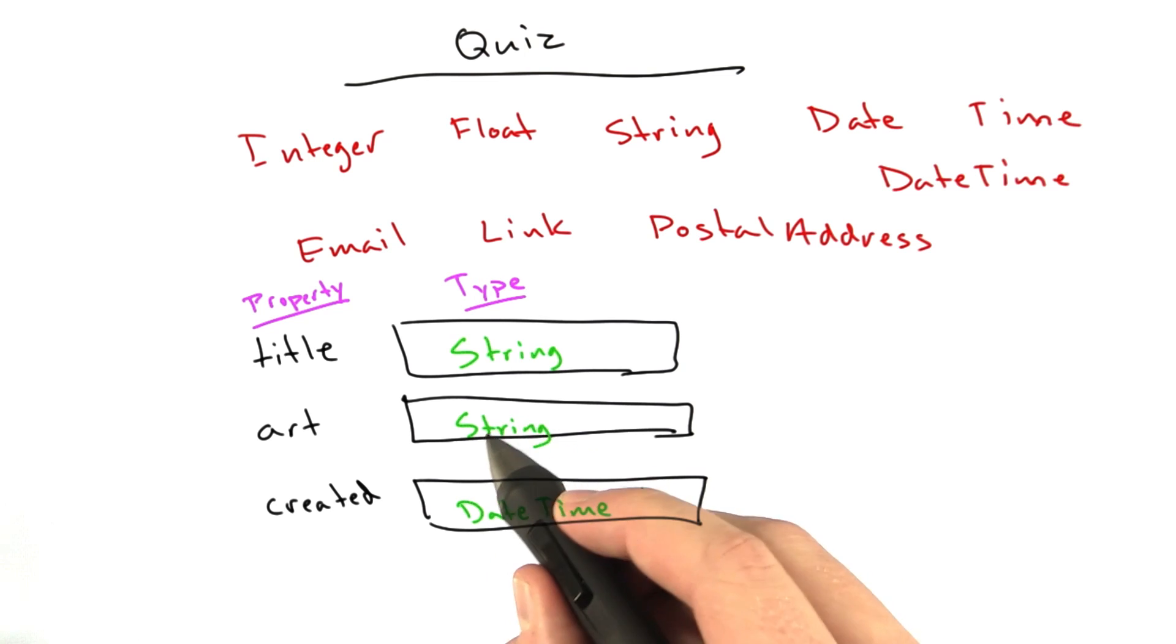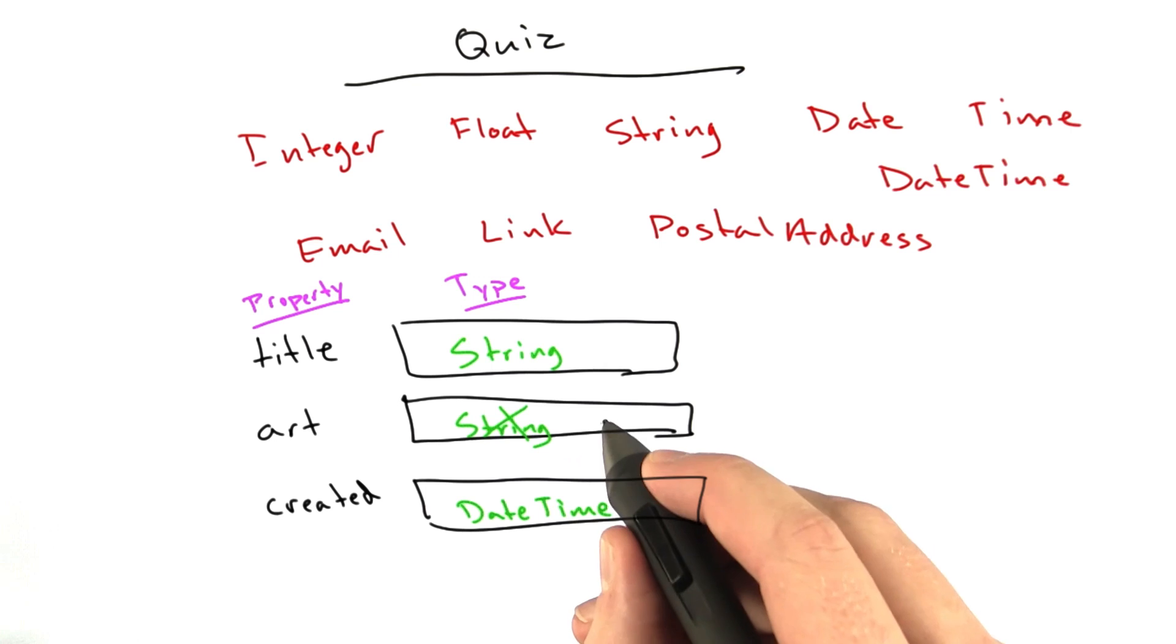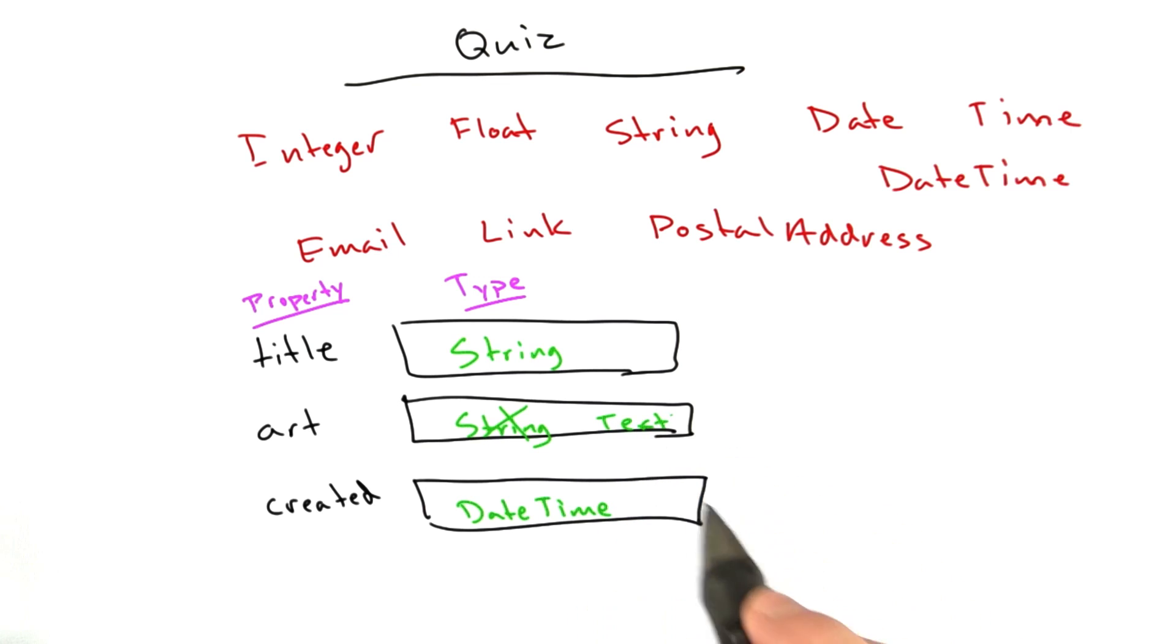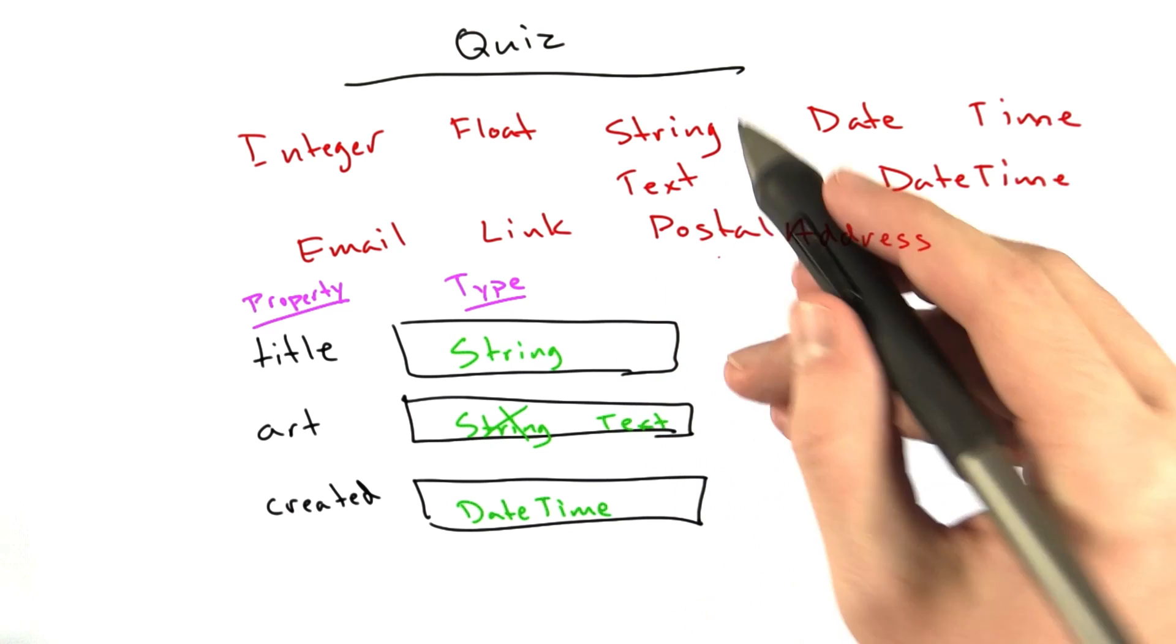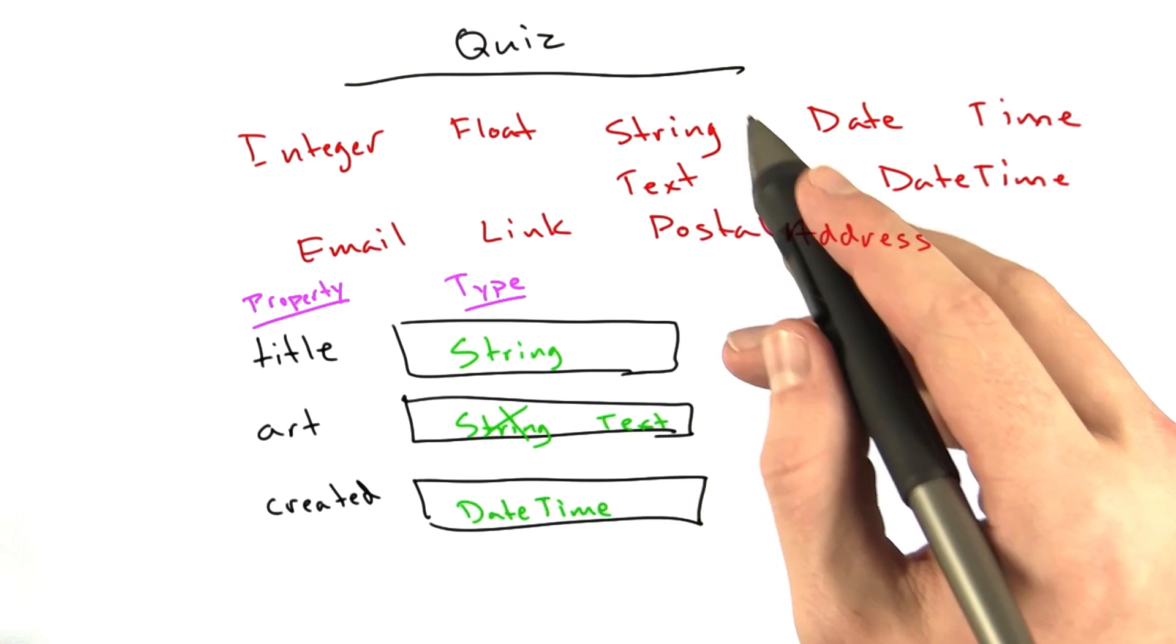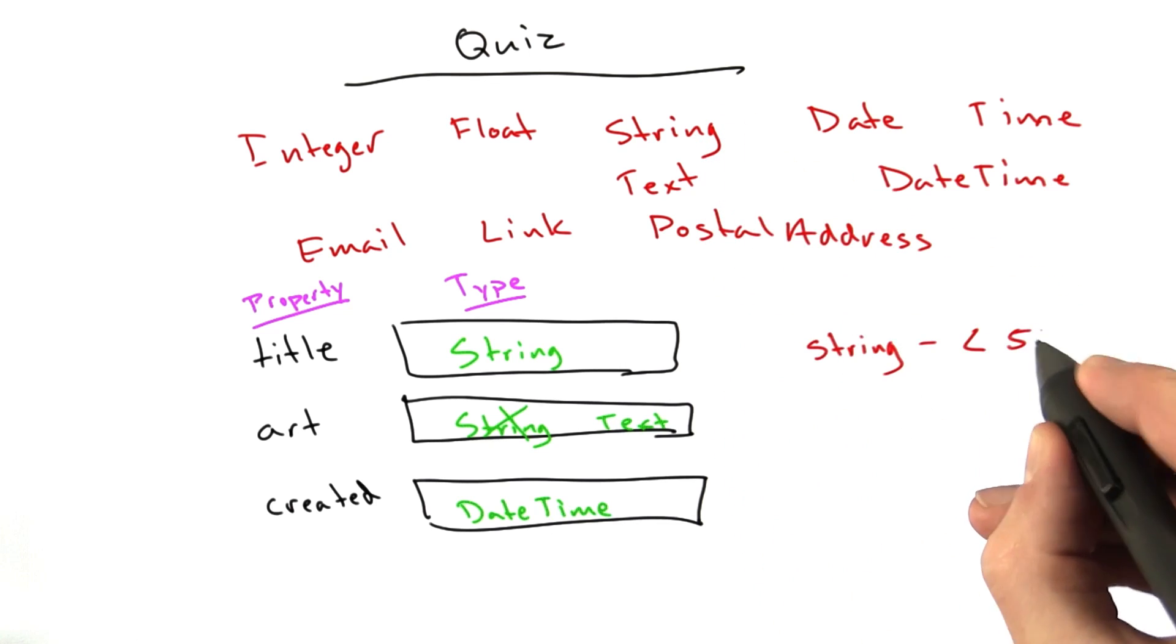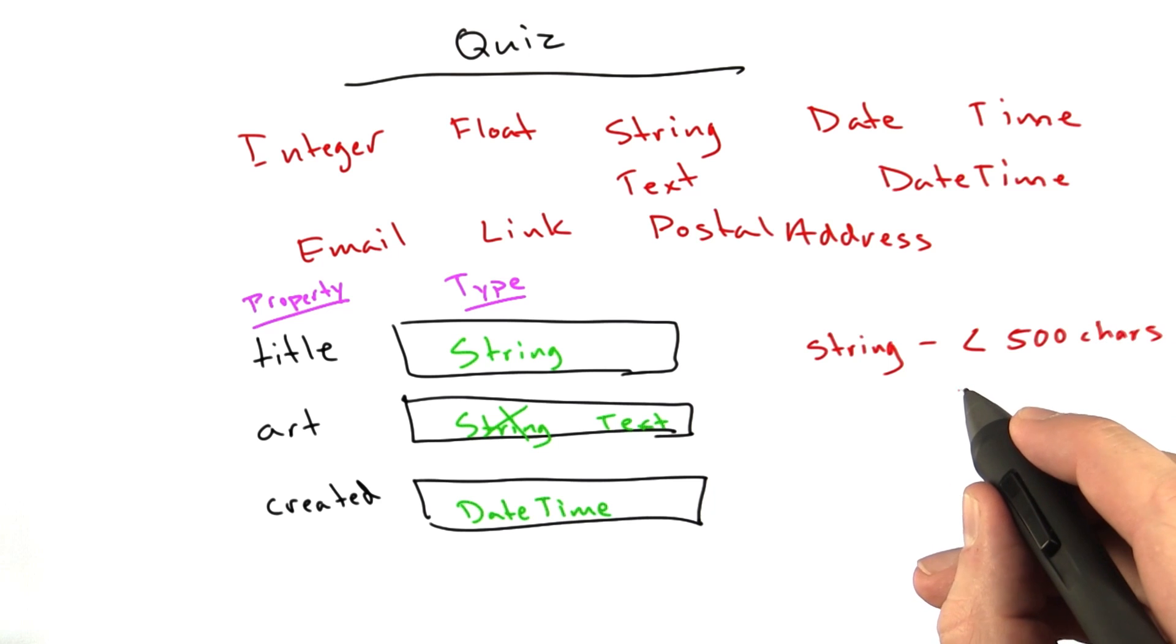Now, actually I lied to you. We're not going to use a string. We're going to use something called text, but there's no way for me to ask a quiz without giving away the answer. I learned while writing this that there is another type called text, and the difference between a string and a text is that a string must be under 500 characters and can be indexed.